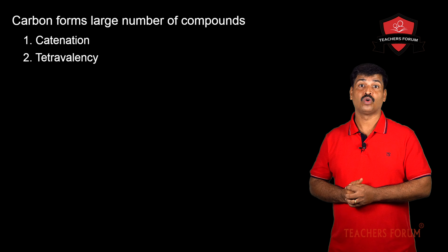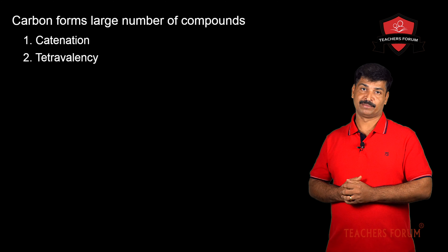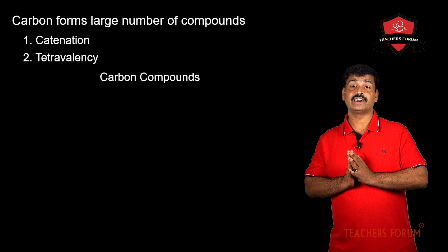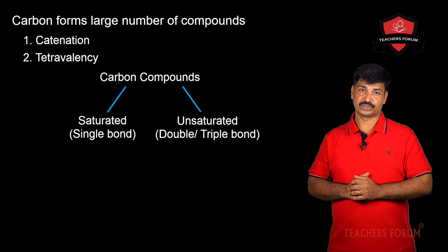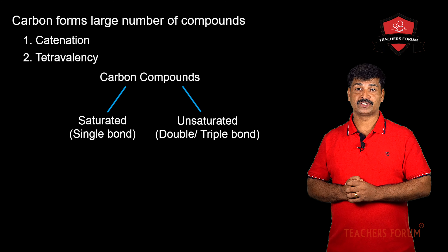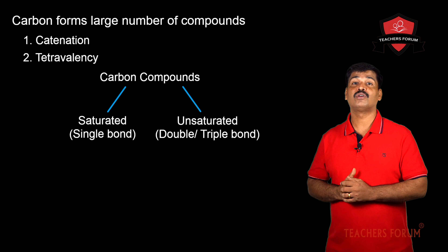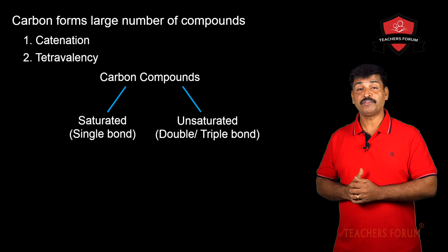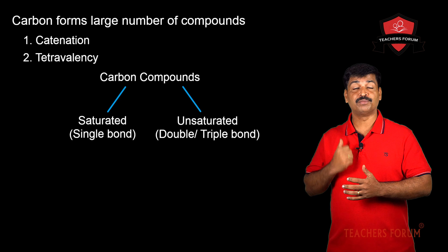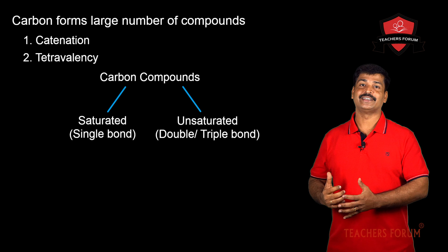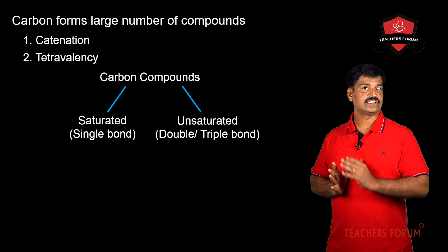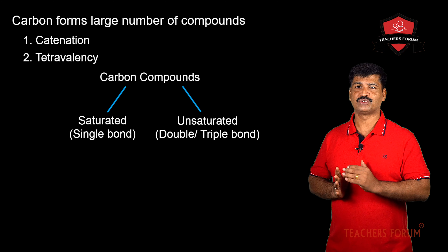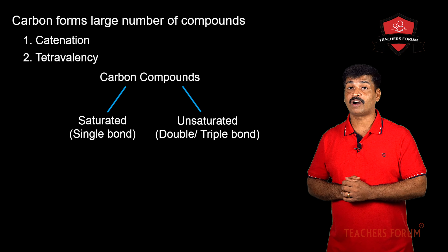The second reason is tetravalency. Carbon has a valency of 4, so carbon atoms are capable of bonding with other carbon atoms or with atoms of monovalent elements. In this chapter, carbon compounds are divided into two categories: saturated carbon compounds and unsaturated carbon compounds. If the bonds in a carbon compound are single bonds, the compound is saturated. If double bonds or triple bonds are present, the compound is unsaturated.